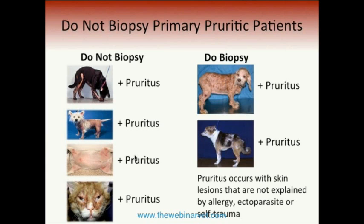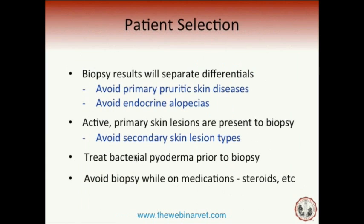There are pruritic patients to biopsy: those with skin lesions not explainable by allergy, ectoparasite, or self-trauma. For example, epitheliotropic lymphoma patients can be pruritic but have generalized erythroderma, generalized scaling, depigmentation of nose and foot pads, papules, plaques, or nodules — lesions not typical of allergic or ectoparasitic patients. We want to biopsy those lesions not related to self-trauma and pruritus.